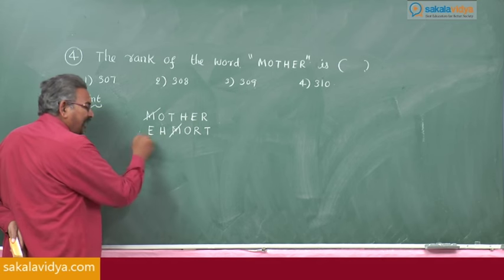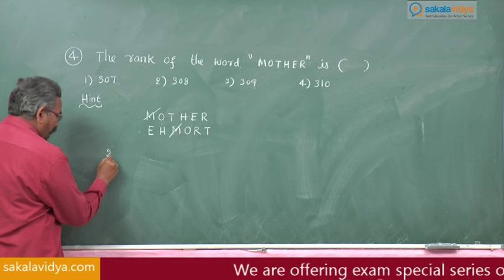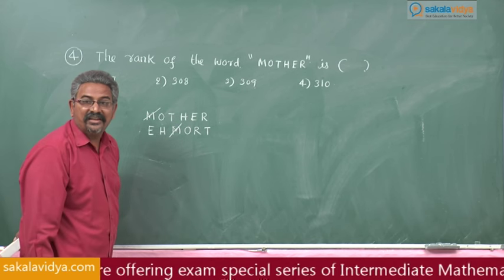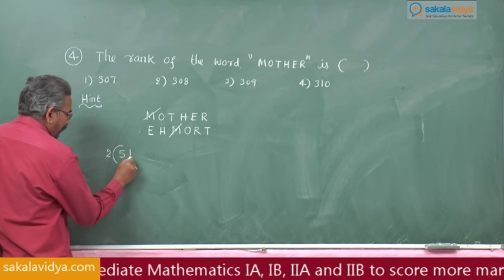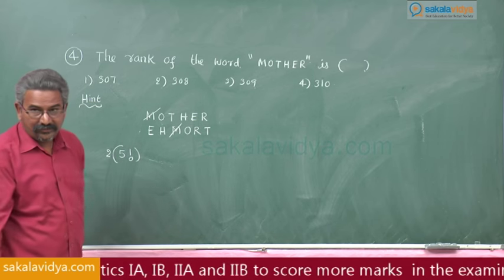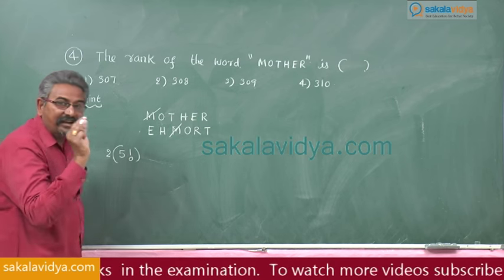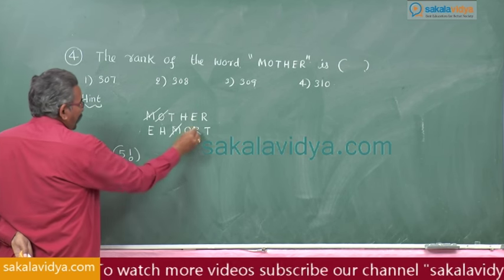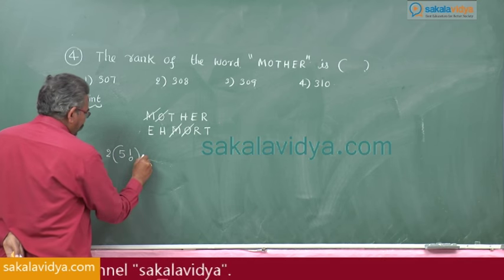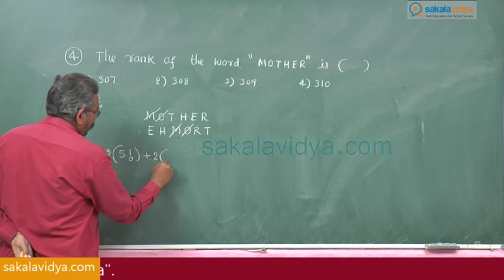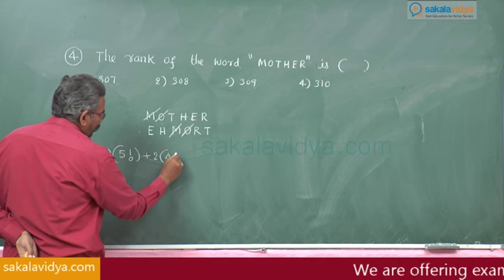Before M, how many letters are left? 2 letters. So write down 2. After M, how many letters are left? 5. So write down 5 factorial. After that, in MOTHER the next letter required is O. Cancel O from both. Now how many letters are left before O? 2 letters, so write 2. After O, in the word above, 4 letters are left. So write down 4 factorial.